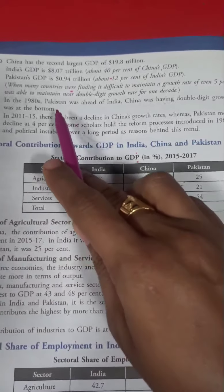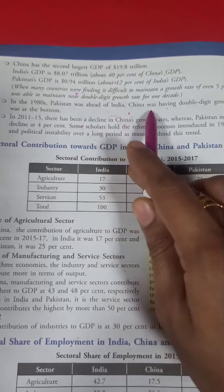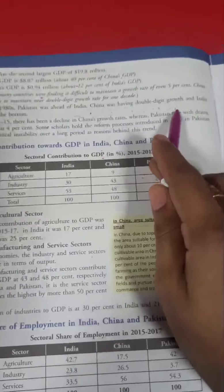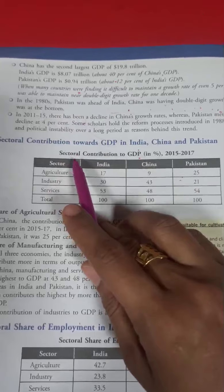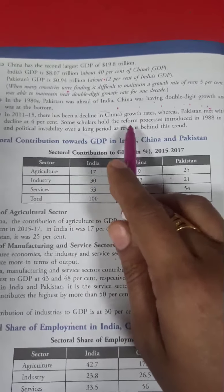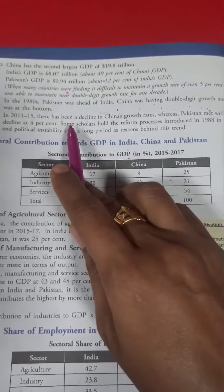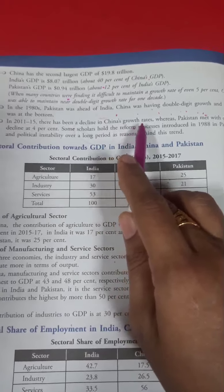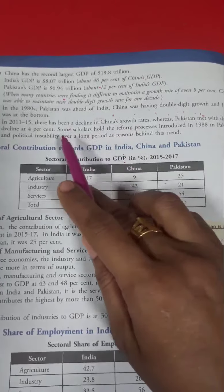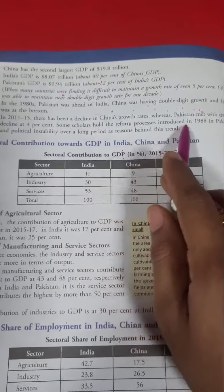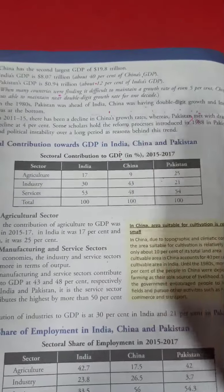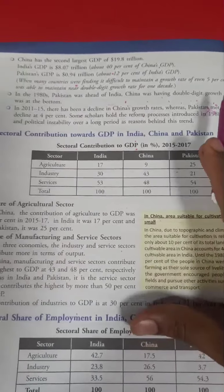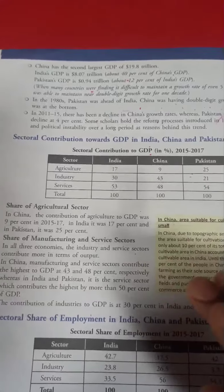Until the 1980s, Pakistan was ahead of India in growth. China maintained double-digit growth while India was at a lower level. But recently, from 2011 to 2014, there was a decline in China's growth rate. Pakistan also saw about a 4% decline, partly due to economic reforms.